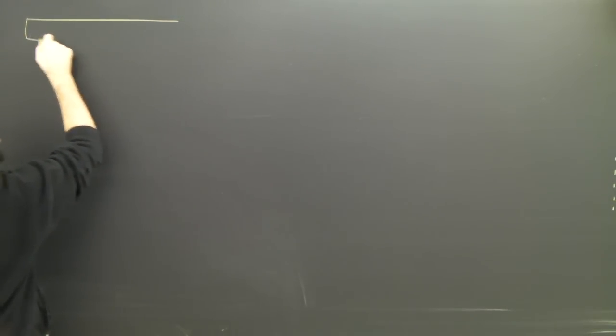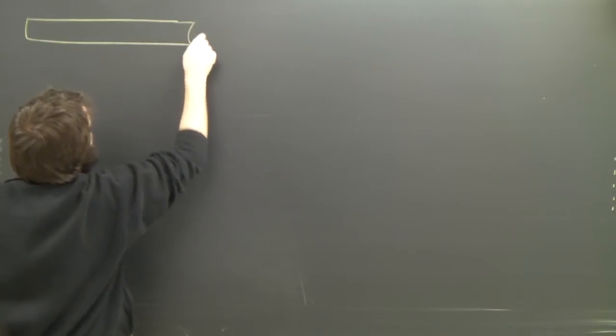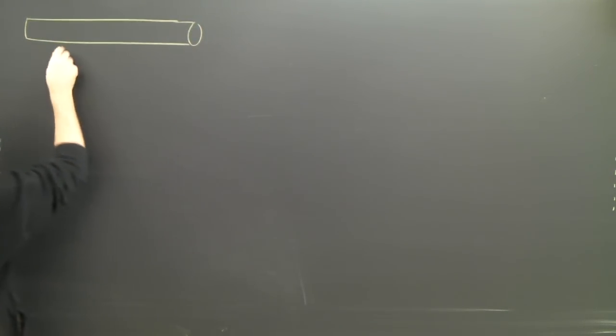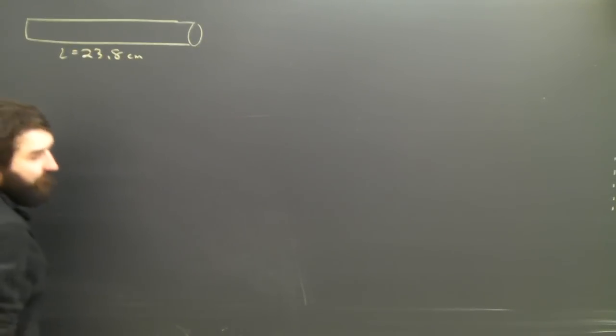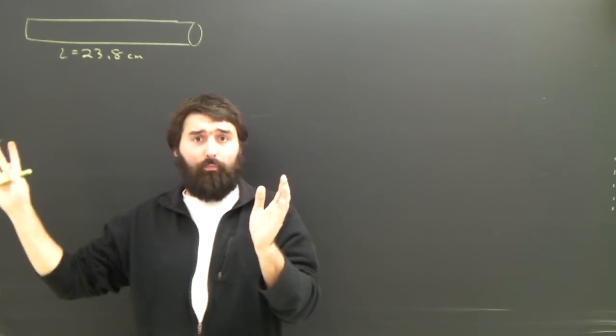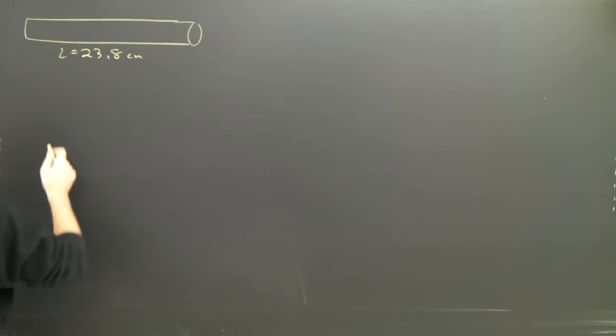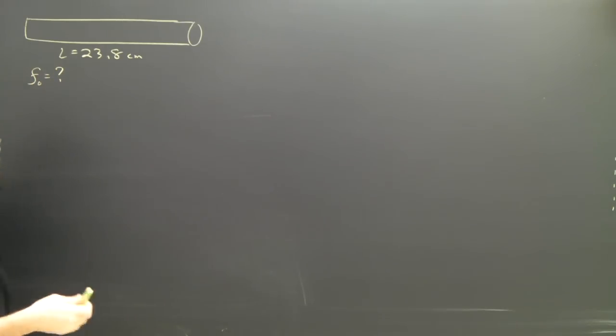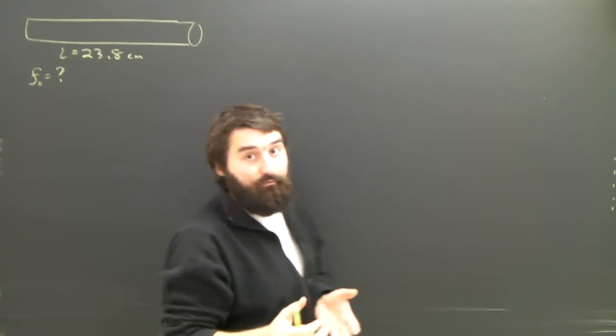Okay, so now we're going to do a question involving columns of air, a flute. So what we've got is a flute here, which is an open tube. And if our flute has a length of 23.8 centimeters from the closed end to the first open hole, the question quite simply is what will the frequency be? What will the fundamental frequency for this particular setting of the flute be?